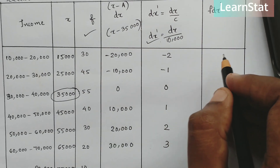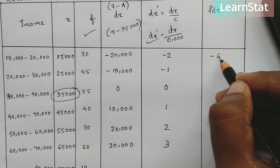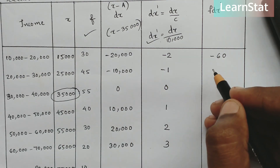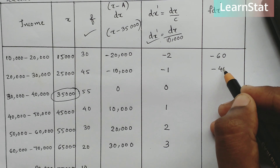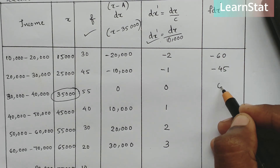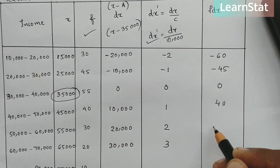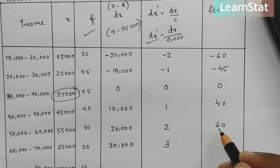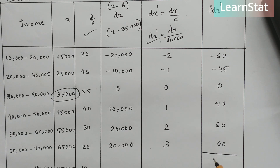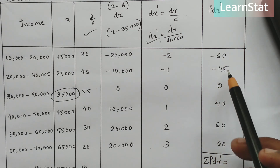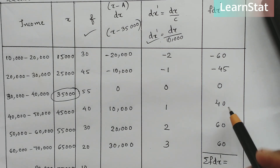Now we multiply frequency by dx-dash for each row: 30 into minus 2 is minus 60; 45 into minus 1 is minus 45; 55 into 0 is 0; 40 into 1 is 40; 30 into 2 is 60; 20 into 3 is 60. So sigma f dx-dash equals minus 60 minus 45 plus 0 plus 40 plus 60 plus 60.